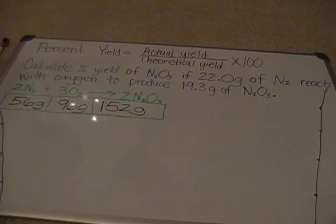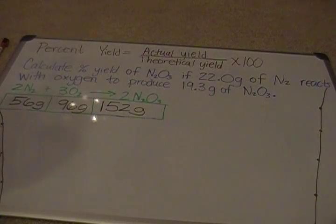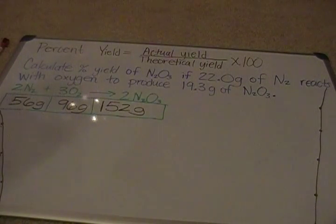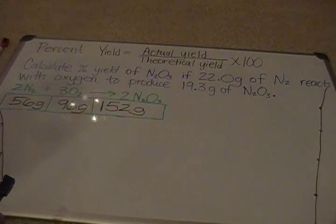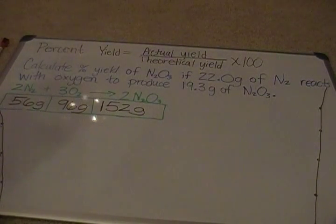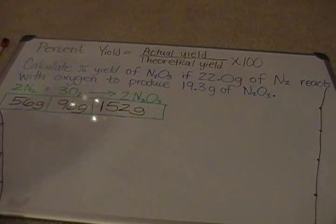Calculating percent yield means you're comparing the actual yield — the actual amount of product you get from a chemical reaction — with the theoretical yield, or the mathematical amount you would expect to get. Every time we've been doing stoichiometry calculations, we've been calculating the theoretical yield, the amount that in a perfect environment you could get back. That doesn't happen in the real world because there are various factors — a competing reaction or error in measurement — that prevent you from getting back 100% of what you'd mathematically calculate.